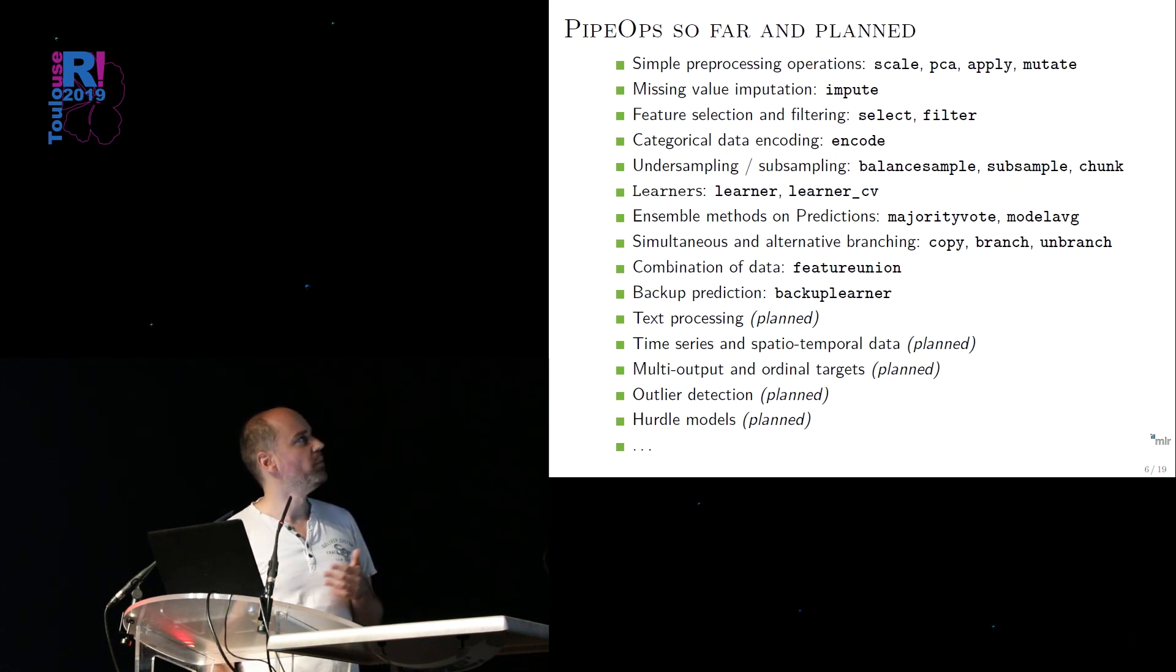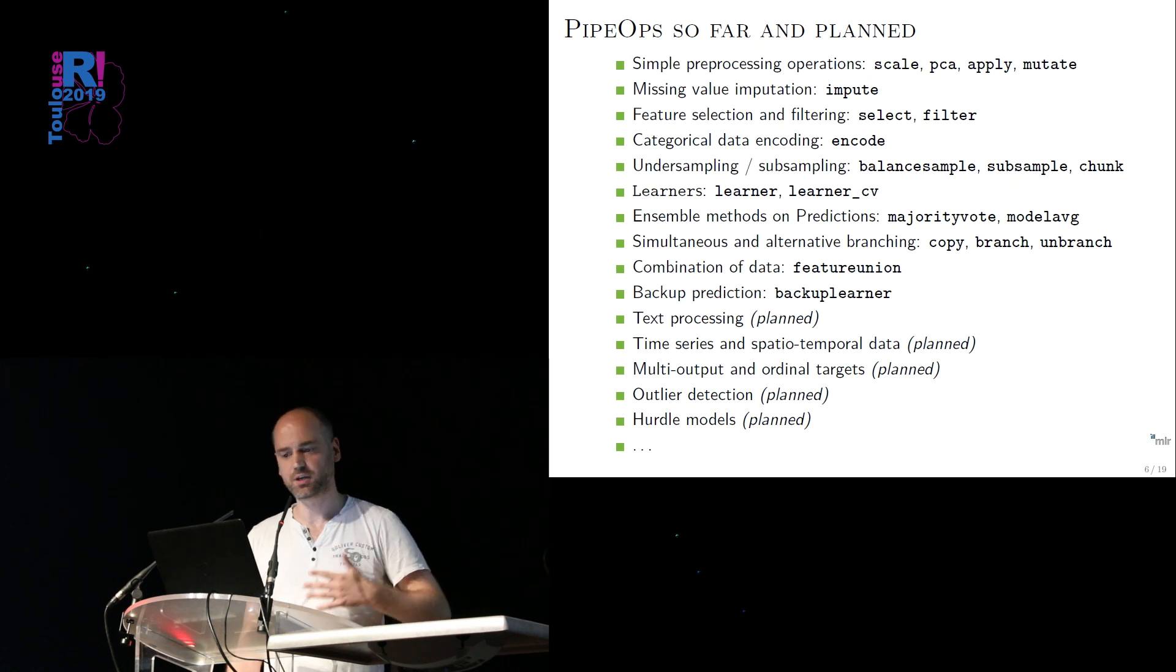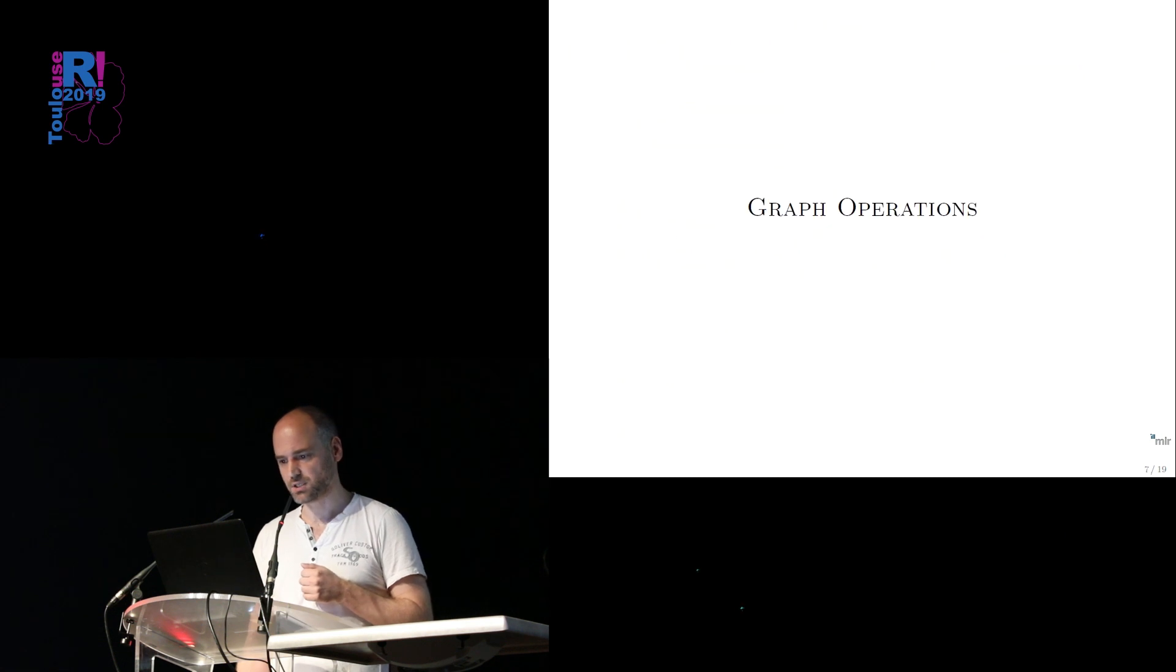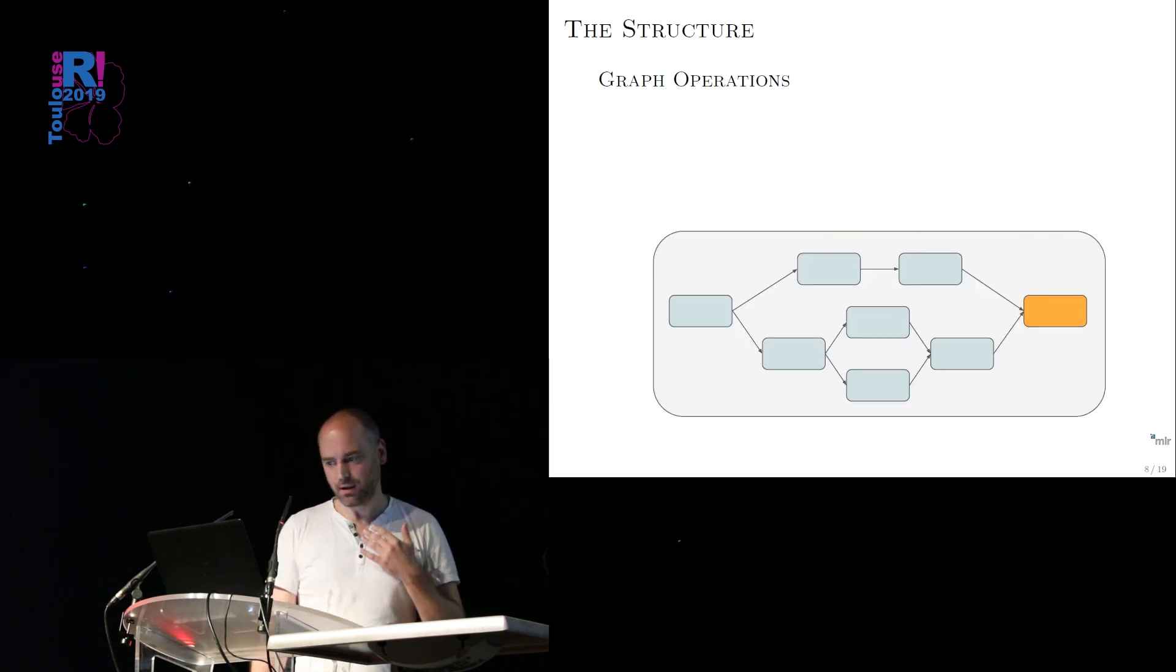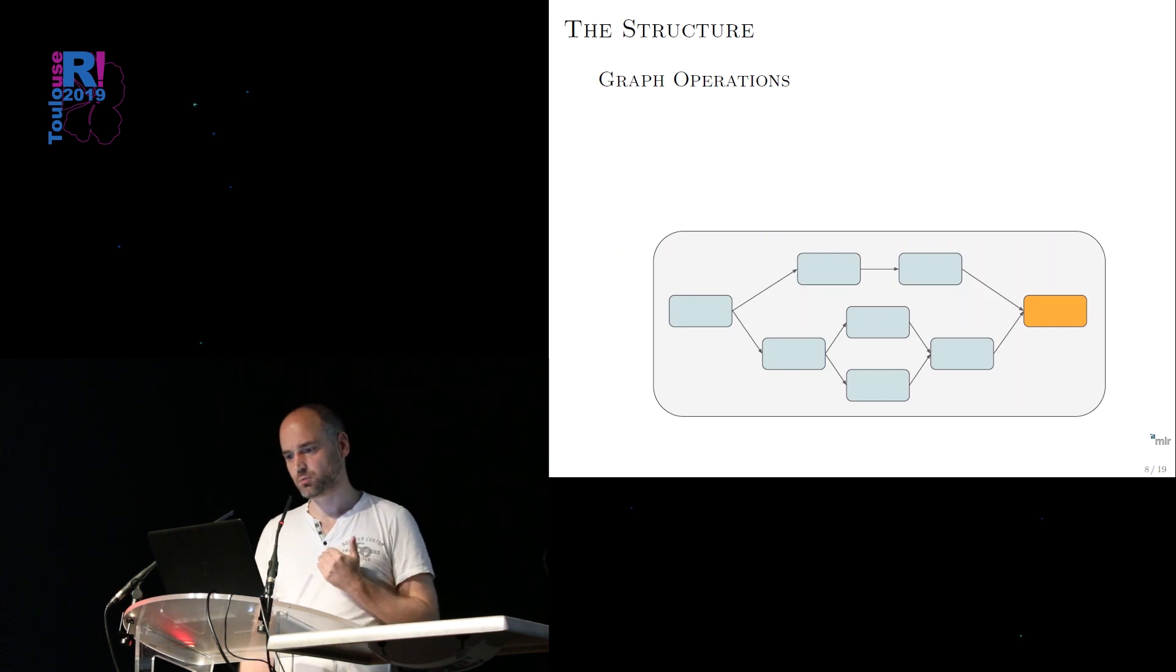There's lots of stuff already implemented, I'm not going to read this out. So there's preprocessing operations, imputations, selection and filter operators. Very important categorical encoding operations. Stuff for resampling and chunking and so on, ensembling. And there's lots of more stuff to come, all of that is placed into dictionaries. And there will be at some point very soon a very long, well-documented list in our book online so you can read up what we have. We are still at the moment testing the underlying technical system. But this will grow very much during the next months and weeks.